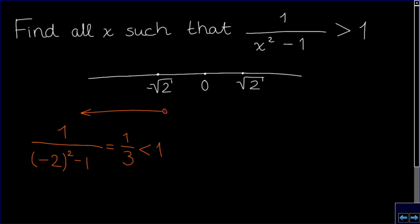In the interval minus the square root of 2, we can take the point 0 and we get 1 over 0 squared minus 1, which is equal to minus 1, which is also smaller than 1.